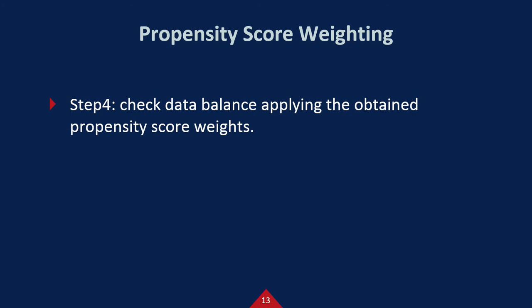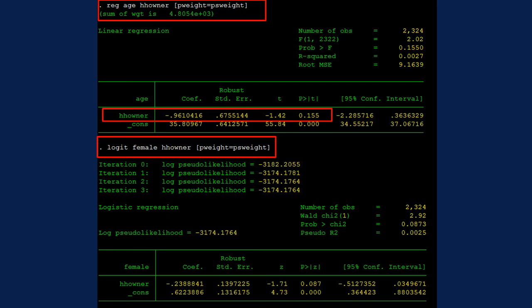The fourth step is to check data balance once again. But this time, you need to apply propensity score weight in models. So we need to use a p weight like here.